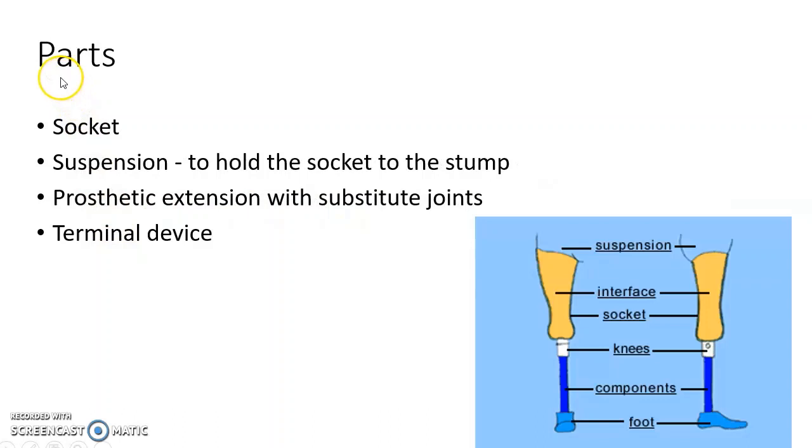Now let us see about the parts of a prosthesis. The various parts of a prosthesis are socket, which is attached to the stump; suspension, which is useful to hold the socket to the stump; prosthetic extension with substitute joints; and terminal device.